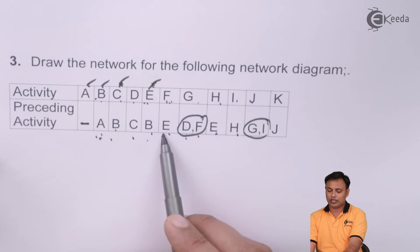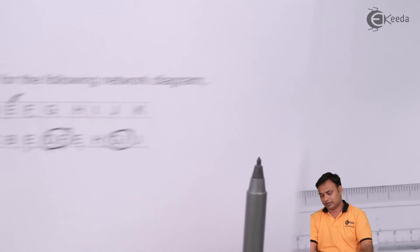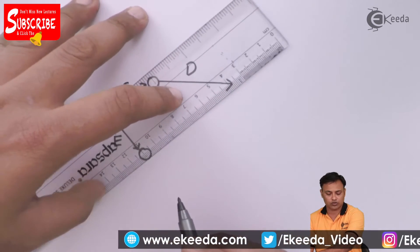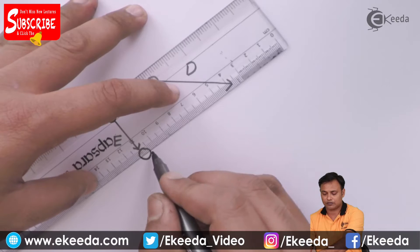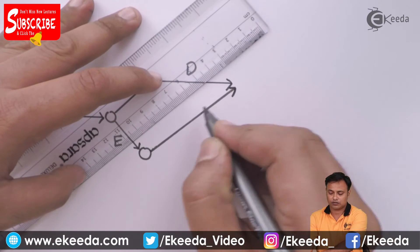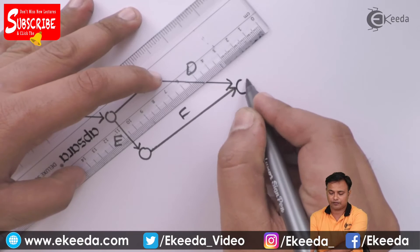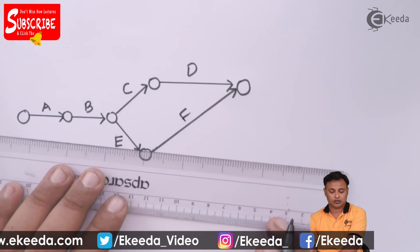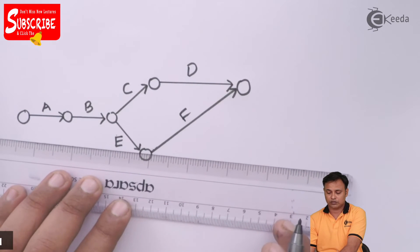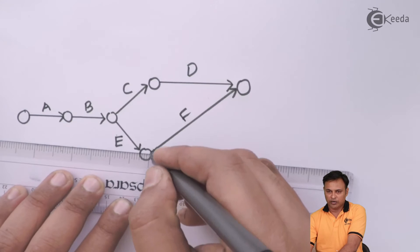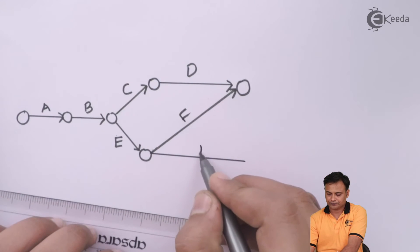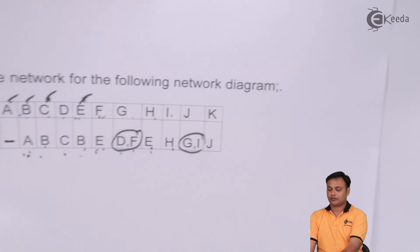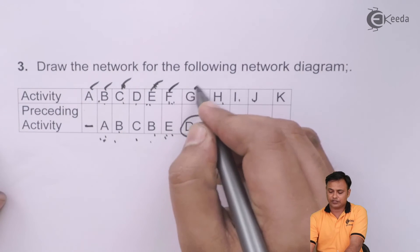After E we have F because I need to join D and F. Here comes my H. We are done with F, G and H.